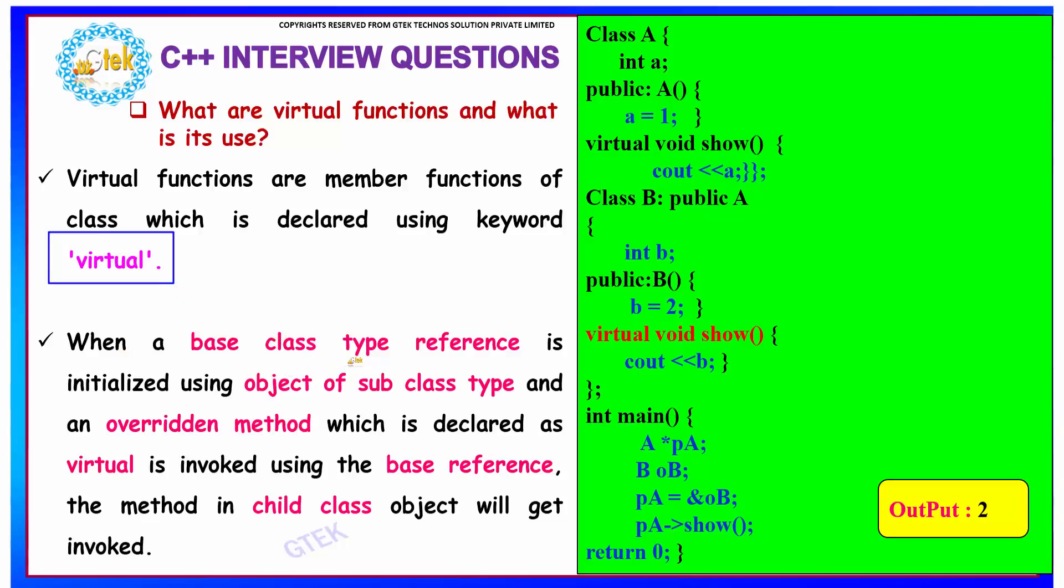When a base class type reference is initialized using the object of subclass type, that is your base class type. You have your base class over here to be A and your subclass to be B which is inherited as the public of A.